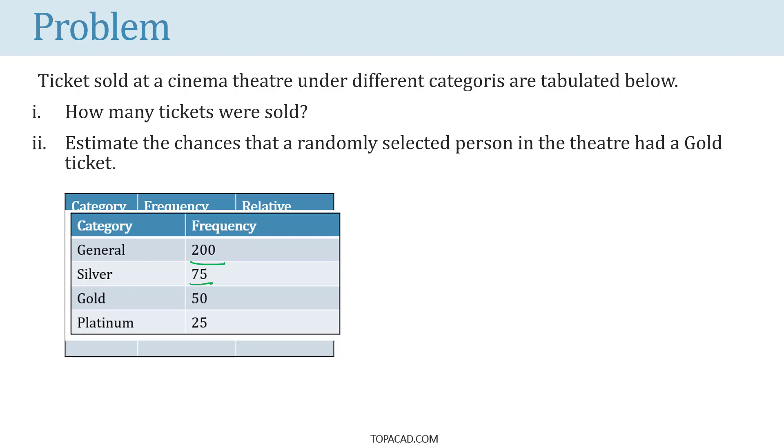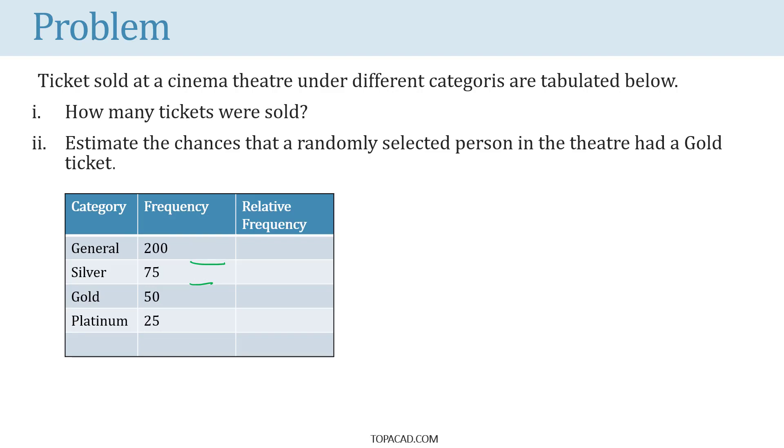So, let's find the total number of tickets that we sold. If we add up the frequency of each category of tickets, we'll get the total number of tickets. In this case, it is 350.